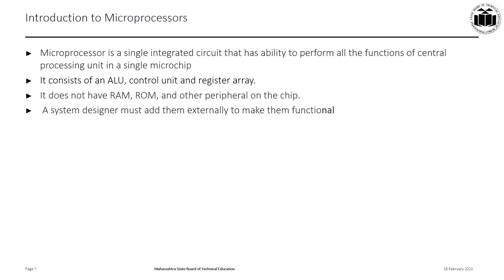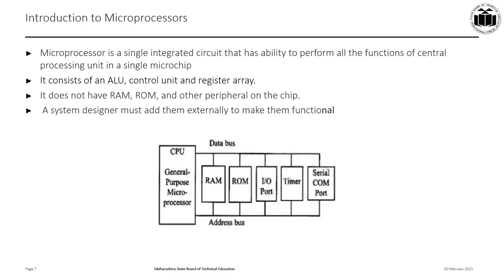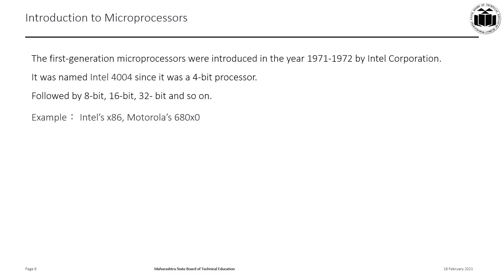Microprocessors do not have RAM, ROM, or other peripherals on the chip — all these need to be added externally to make the microprocessor functional. In the block diagram of the microprocessor, the CPU is the general-purpose microprocessor, and the RAM, ROM, I/O ports, timer, and serial communication port are all added externally. They are connected to the CPU with the help of the data bus and the address bus.